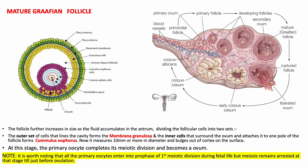The secondary follicle develops further into a mature Graafian follicle as it increases in size with more fluid accumulation. The antrum divides the follicular cells into two types: the outer cells lining the cavity form the membrana granulosa, and the inner cells surrounding the ovum at one pole form the cumulus oophorus. The follicle now measures more than 10 mm in diameter and is visible to the naked eye as a bulge on the ovary surface. At this stage, the primary oocyte completes its meiotic division to become an ovum.